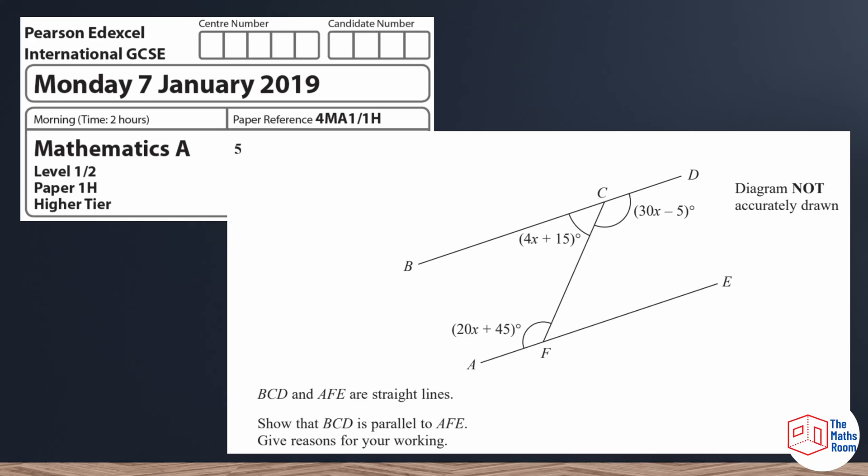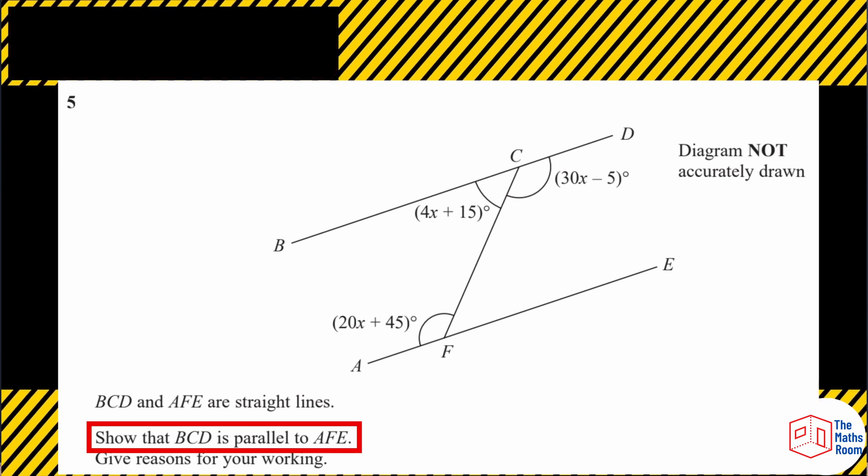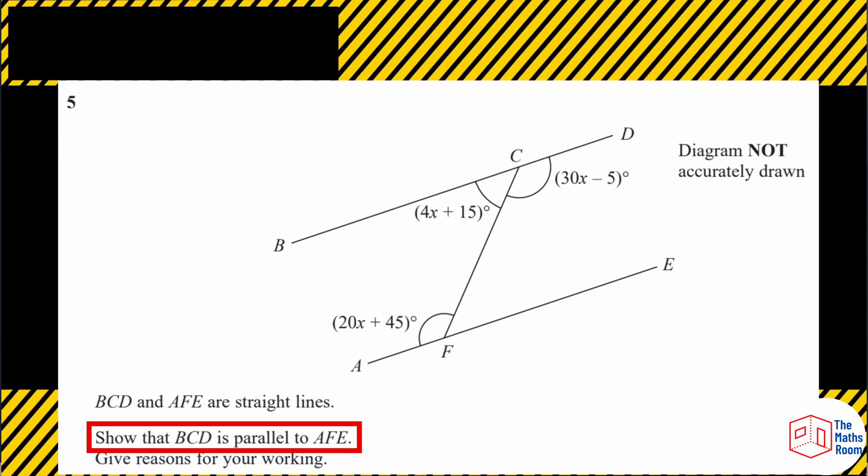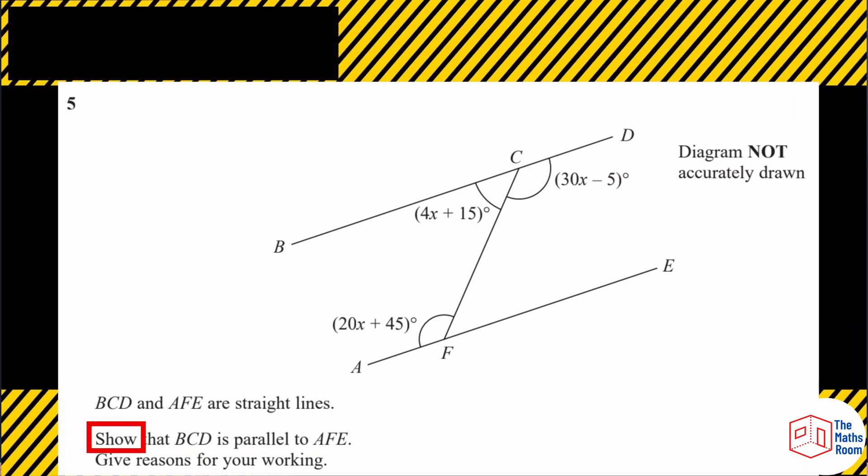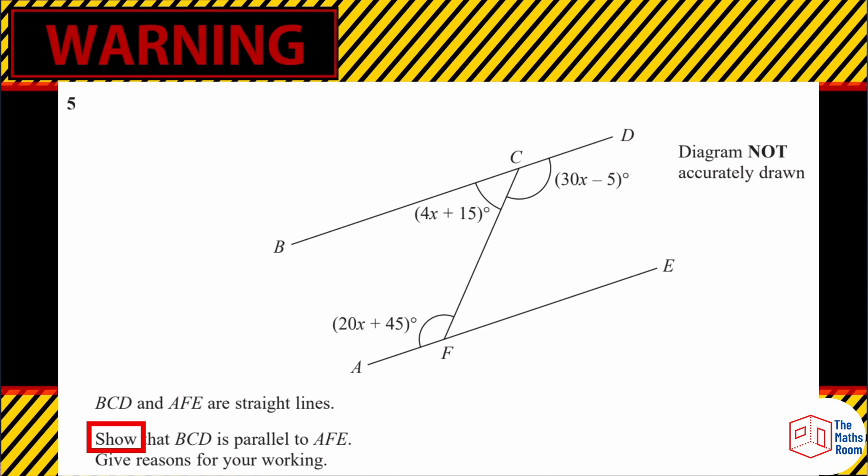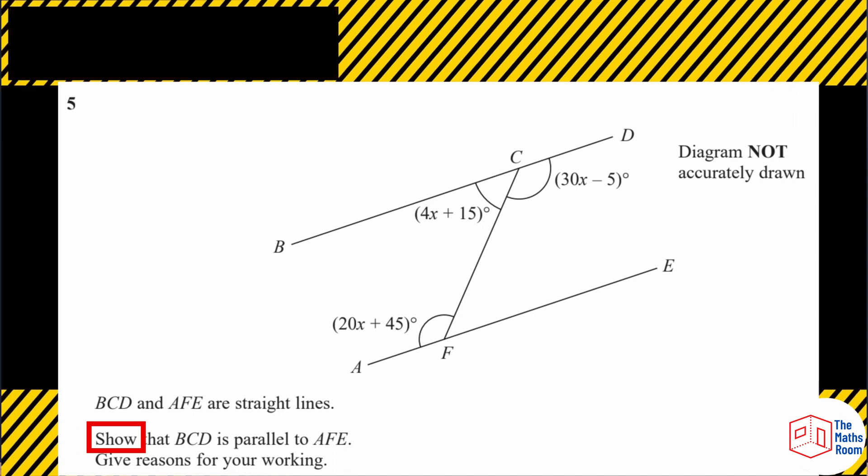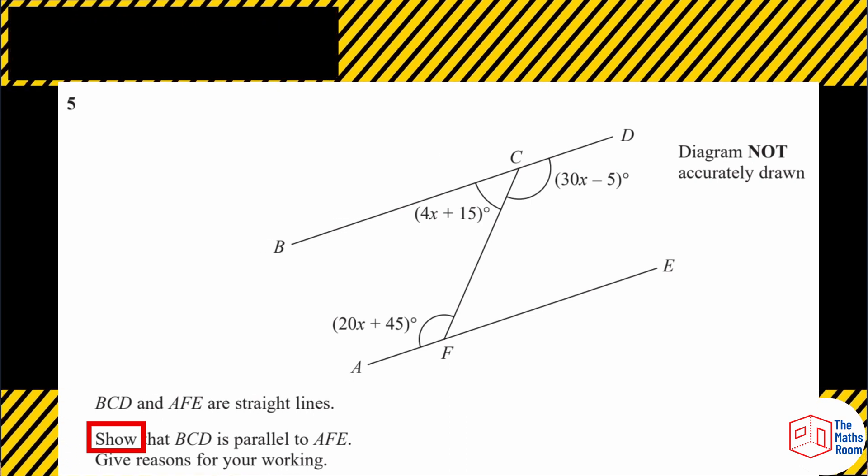Here's an IGCSE exam question. Before we even get started, the alarm bells should be ringing. It says that we need to show that BCD is parallel to AFE. This means we need to show that they are parallel. So we can't assume the angles are alternate or assume that they're co-interior. We actually need to prove that.